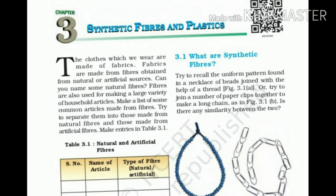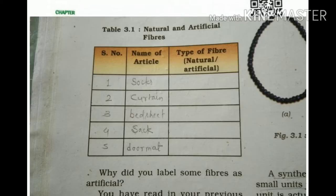As we know, whatever clothes we wear, they are made up of fabrics. And fabrics are made up of different types of fibers. Fibers are also used for making a large variety of household articles. We have to make Table 3.1 and categorize the articles which we use in our daily life.